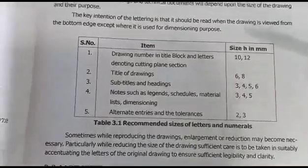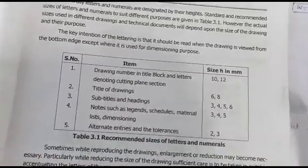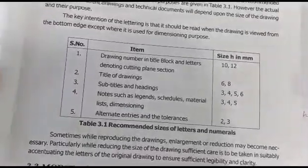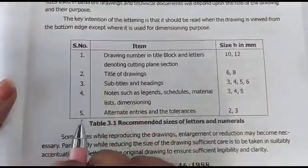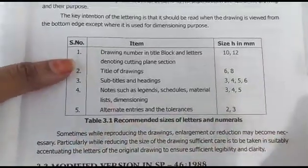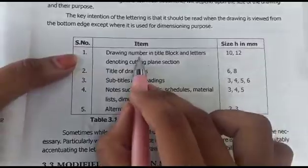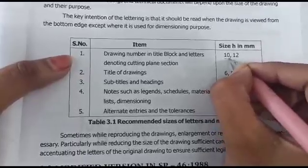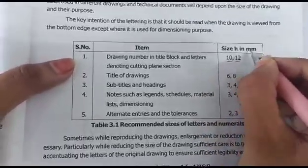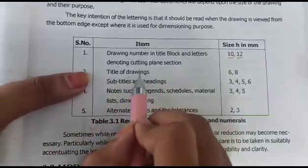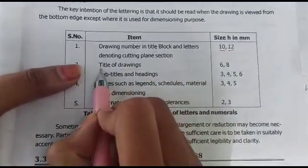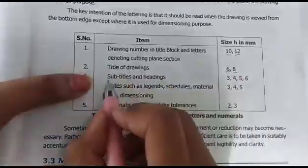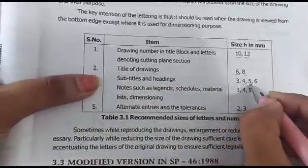When we do lettering and numerals, we have some basic standards. We will use the main table for dimensioning. For a block or title block, the minimum height is 10 mm, not 12 mm. For the title of the drawing, the minimum height is 6 mm, not 8 mm. Subtitles and headings are 3, 4, 5, or 6 mm.